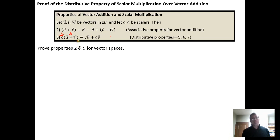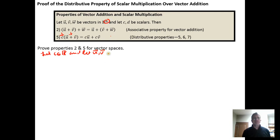Just like we did before, you start off by looking at what elements you need to do the proof. I need a scalar and two vectors. So let c be a scalar, which just means it needs to be a real number, and we need two vectors u and v in the vector space ℝⁿ.